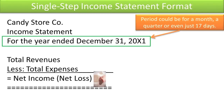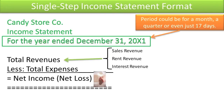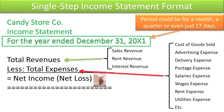When you prepare a single-step income statement, make sure you title it properly with the name of the company, the name of the statement (i.e., income statement), and the period covered by the statement. Then list all revenue accounts and total them up, list all expense accounts and total them up, and then in one single step take total revenues less total expenses to arrive at net income.